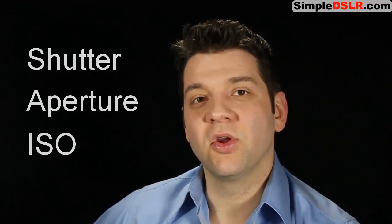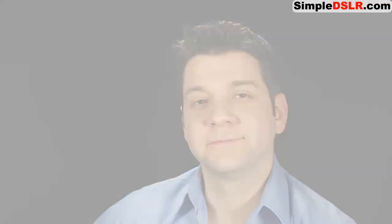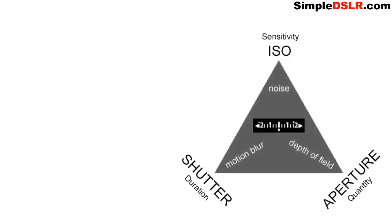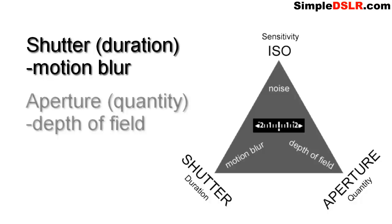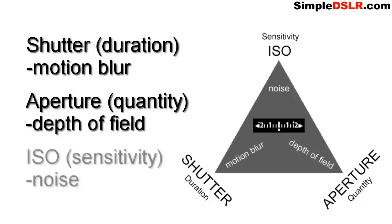There's also white balance, but I'll do a separate video for that. For what these mechanisms do, they also have certain side effects, and it's those side effects that unlock all the cool creative possibilities that you can do in photography. For example, the shutter controls duration and the side effect of that is motion blur. The aperture controls the quantity of light, and the side effect of that is depth of field. The ISO controls the sensitivity of the image sensor, and the side effect of that is noise.